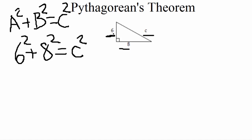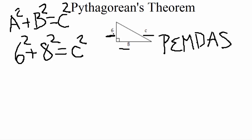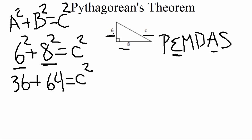After plugging in, we need to simplify using order of operations — most people have heard the acronym 'Please Excuse My Dear Aunt Sally,' which tells us the order to simplify. For this formula we have exponents and addition, and exponents come before addition. So first we take care of the exponents: 6 squared is 36, and 8 squared is 64. Dropping down the plus sign, we have 36 plus 64 equals c squared. Then 36 plus 64 is 100, so 100 equals c squared.